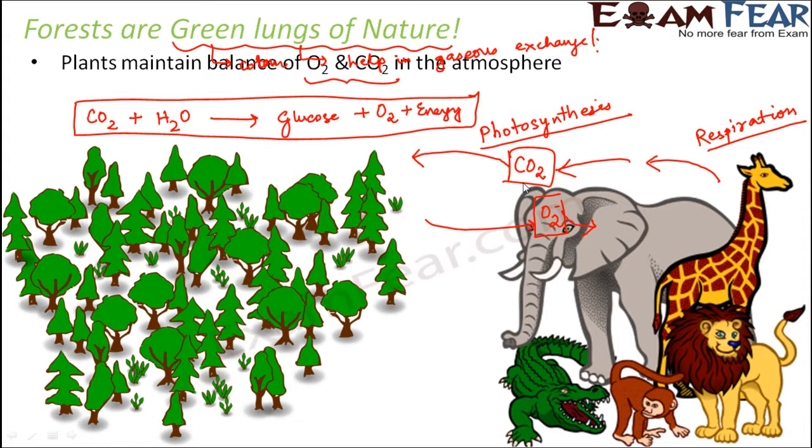What is the purpose of lungs in the human body? Lungs help in exchange of gases. Lungs are the main organ of the respiratory system. When we breathe in and breathe out, that entire process is handled by the lungs. Forests are the lungs of nature. In nature, the carbon dioxide and oxygen intake and outtake is managed by the forests because forests contain a lot of trees. That is why forests are called the green lungs of nature.